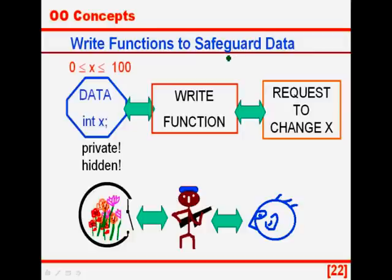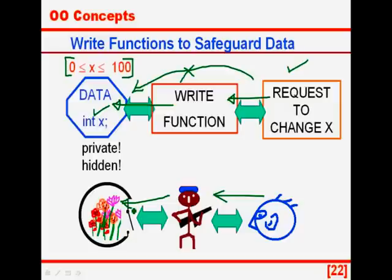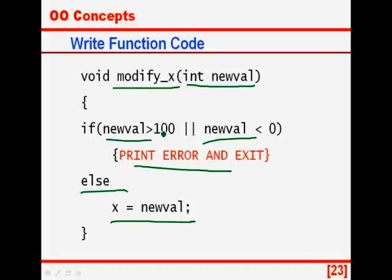So we have write functions to safeguard data. Suppose this is my data, int x, and there is a rule that x must be between 0 and 100 — a business rule from the problem statement. Any request to change x does not work directly on the data as it would in a procedural language; it must send the request to my function. My function will then try to change the value — this is the concept of the outside world talking to the guard. Here is the function modify_x: it receives a new value; if the new value is illegal it prints an error and exits; otherwise the value is changed. By doing this, the business rule that x is between 0 and 100 is enforced at all times and data integrity is never compromised.